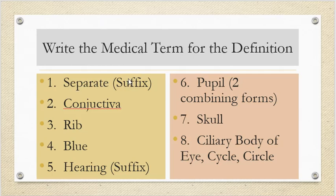Number 6 has two combining forms and it means for pupil.